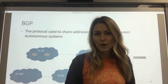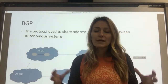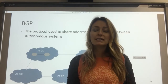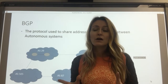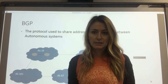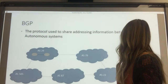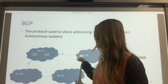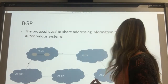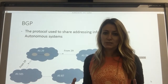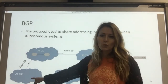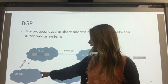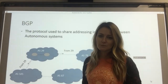So autonomous system 29 is going to request a whole big block of IP addresses. When it gets its big allocation of IP addresses, it needs to advertise to the other autonomous systems which address space it's going to use. So autonomous system 29 sends out the information to 79 and to 505, and they both know where that information came from — 79 knows it came from 29, and 505 also knows that it came from 29.